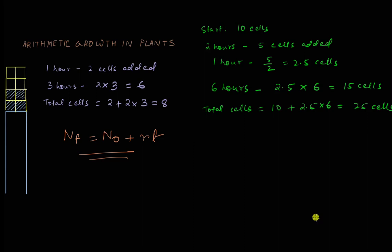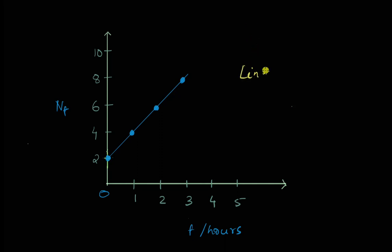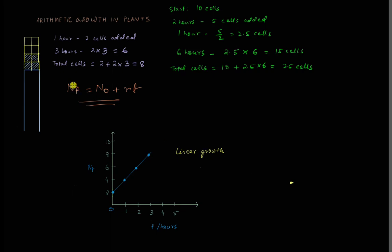Now let's see what the graph looks like. We plot Nt — the number of cells — against time in hours. At zero time we had two cells, after one hour four cells, after two hours six cells, and after three hours eight cells. If we join the dots, we get a straight line. Because it's a straight line, this type of growth is also called linear growth. So in arithmetic or linear growth, the formula Nt = N0 + rt gives the number of cells at any given time, where r is the growth rate constant — the number of cells added per unit time — and the graph shows a straight line.